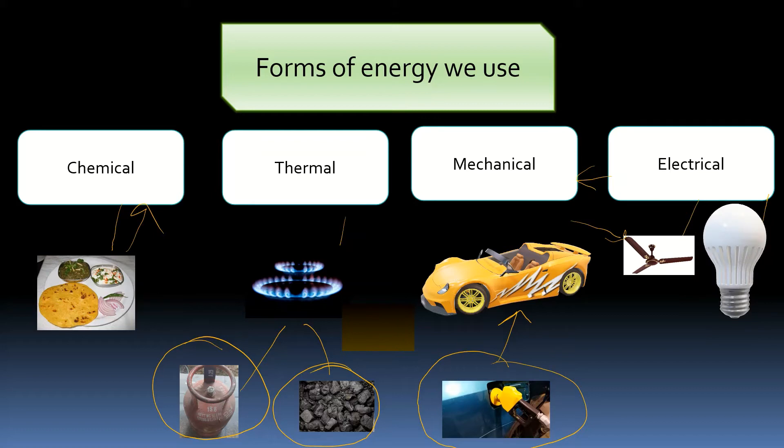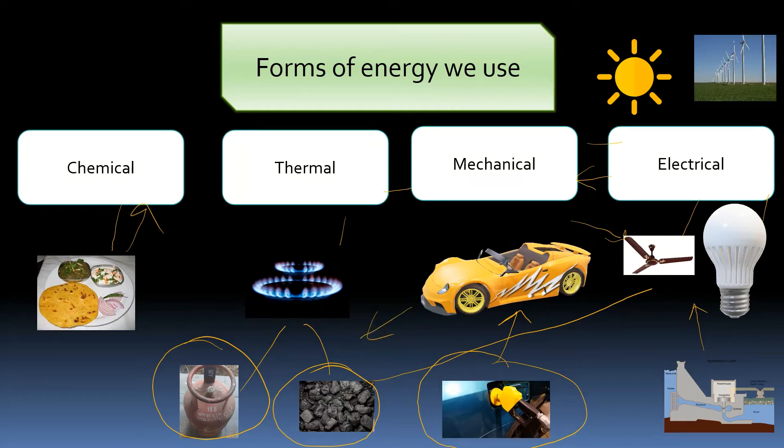From where do we get electrical energy? We get electrical energy from coal which is the largest source of producing electricity in India. You can also get it from hydropower and so many other sources, for example, solar and wind which we will discuss in another video.